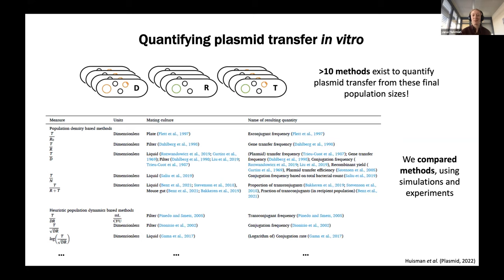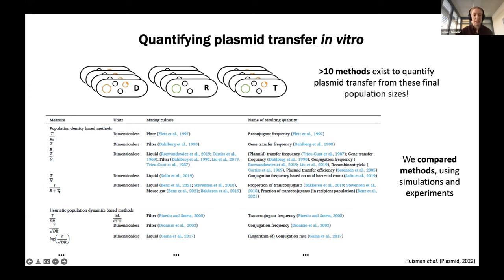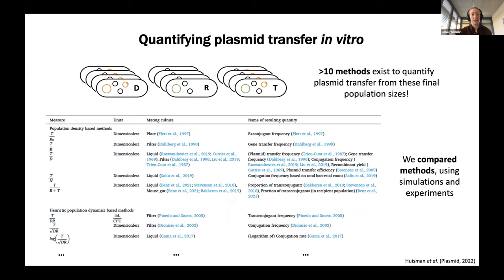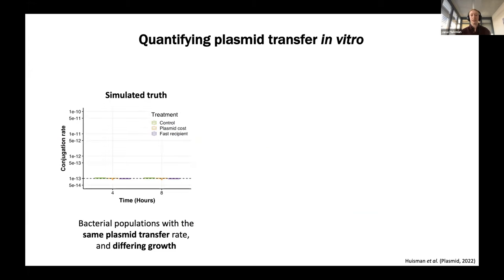This is the conserved part, but this is also where the mess starts — because now you have these final population sizes and what do you do with that? How does this tell you anything about the underlying dynamics of plasmid transfer? The first thing we did in this paper was to catalog the different methods out there. The simplest methods are simple enumerations: transconjugants over donors, or what fraction of the recipient population carries the plasmid.